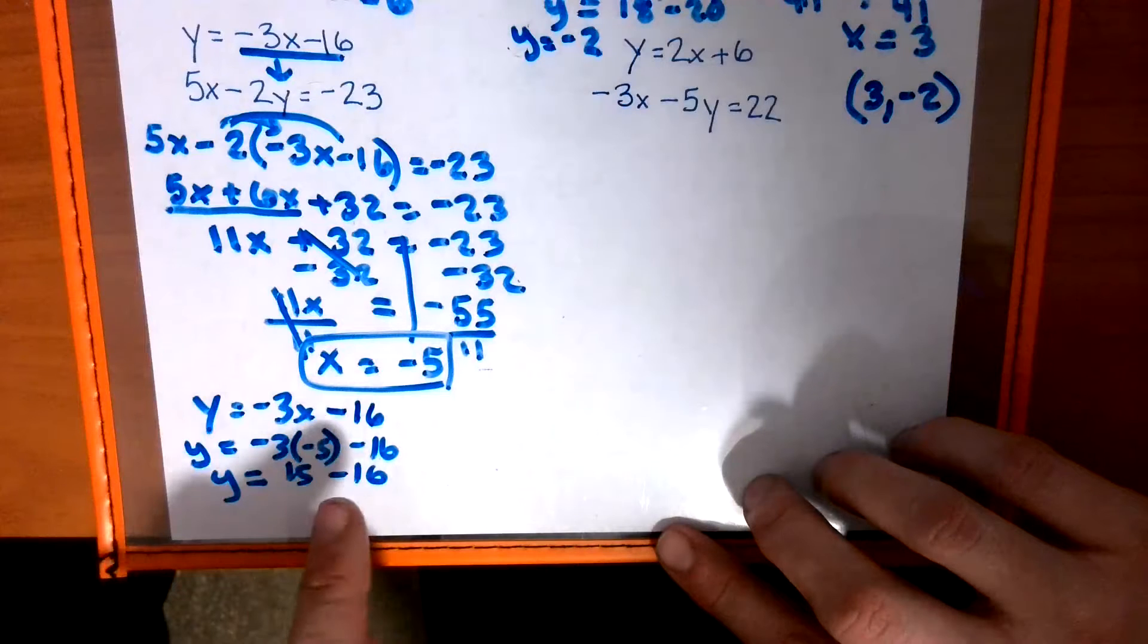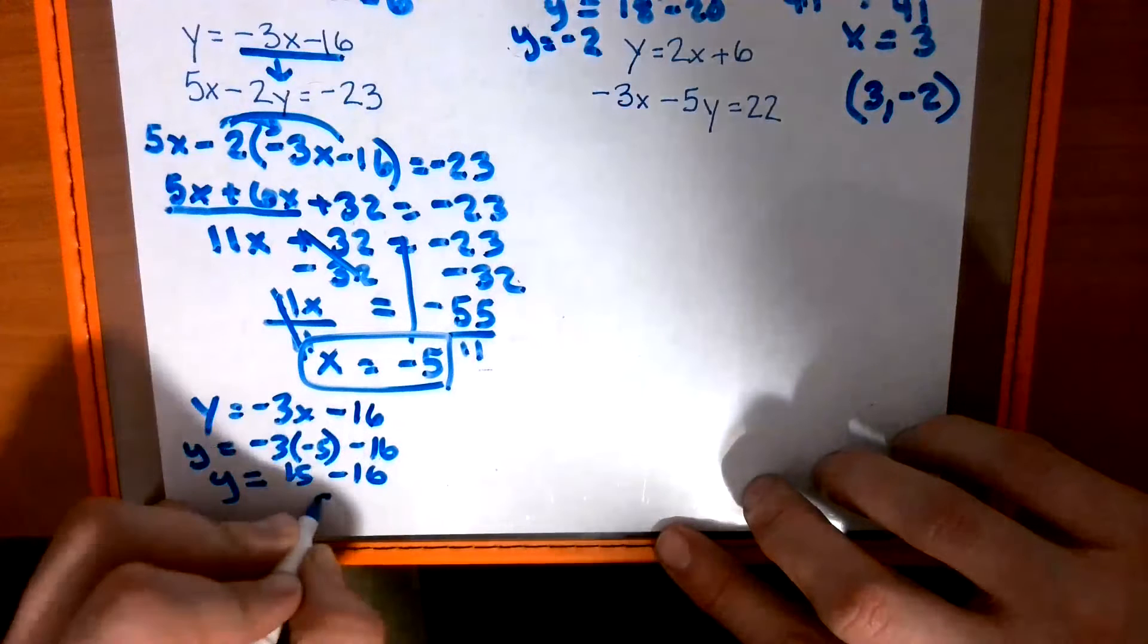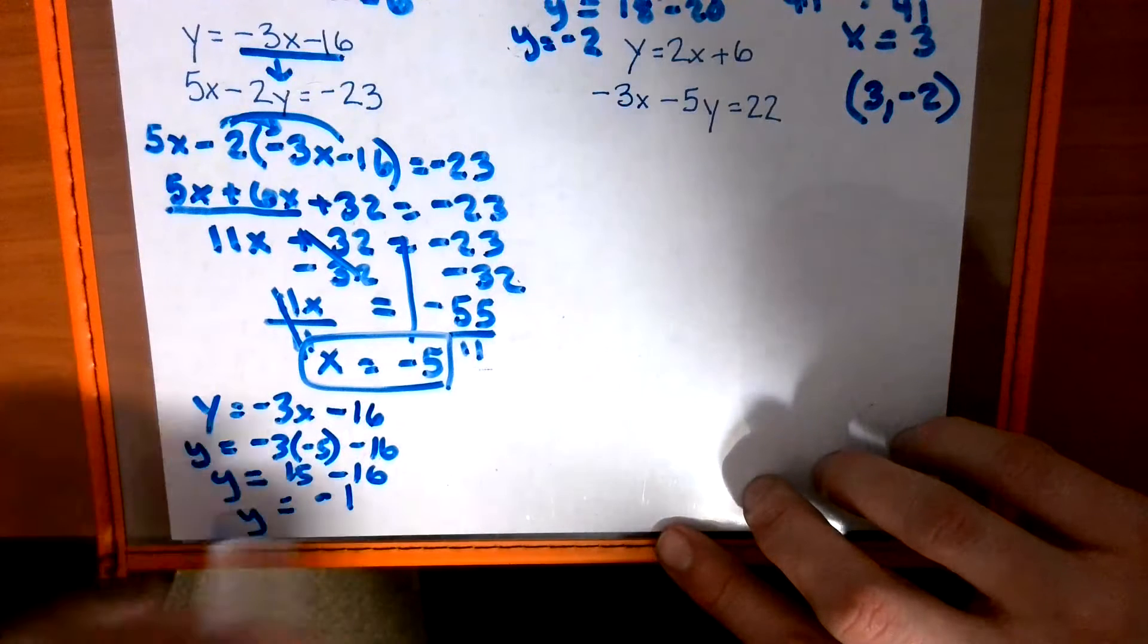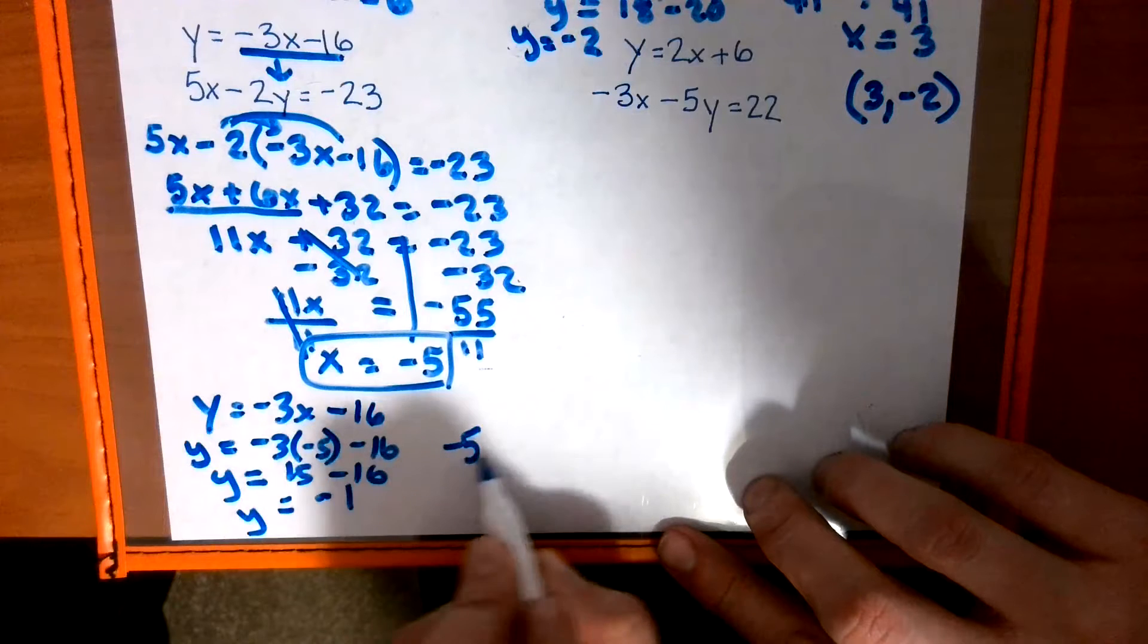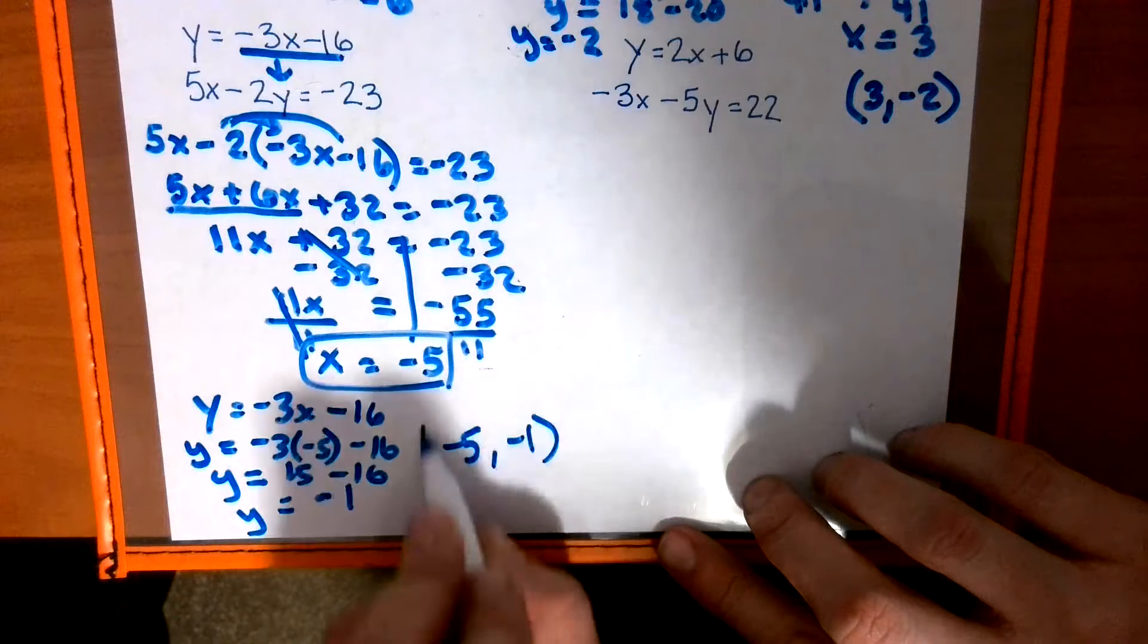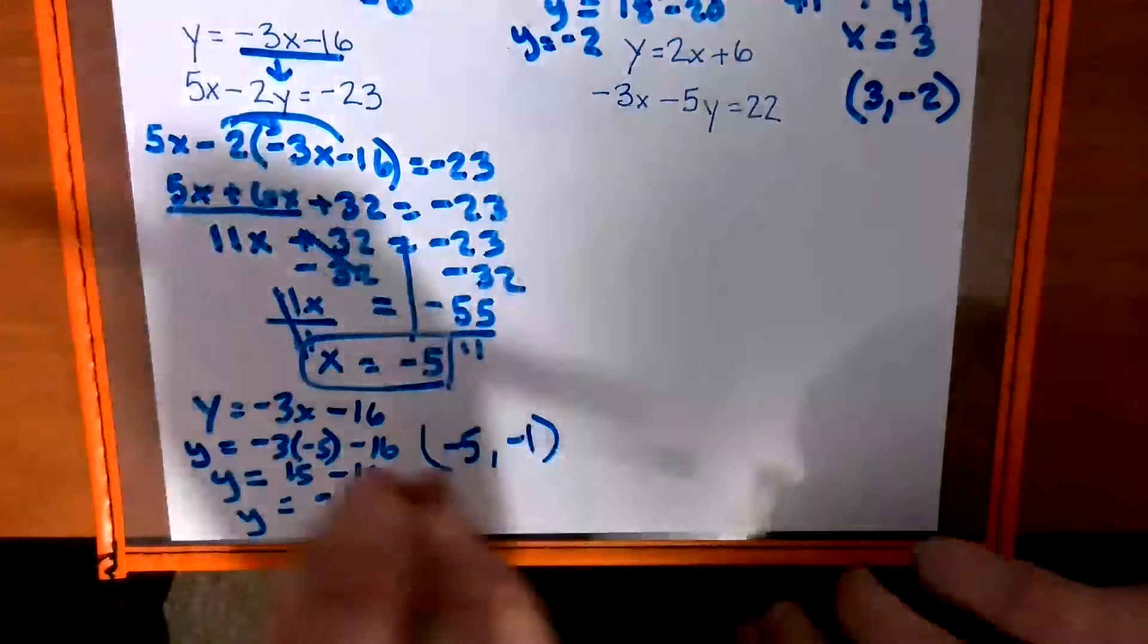And we're going to take away 16. 15 good guys, 16 bad guys. Bad guys are going to win by 1. And my coordinate pair would be negative 5, negative 1. And that's that one.